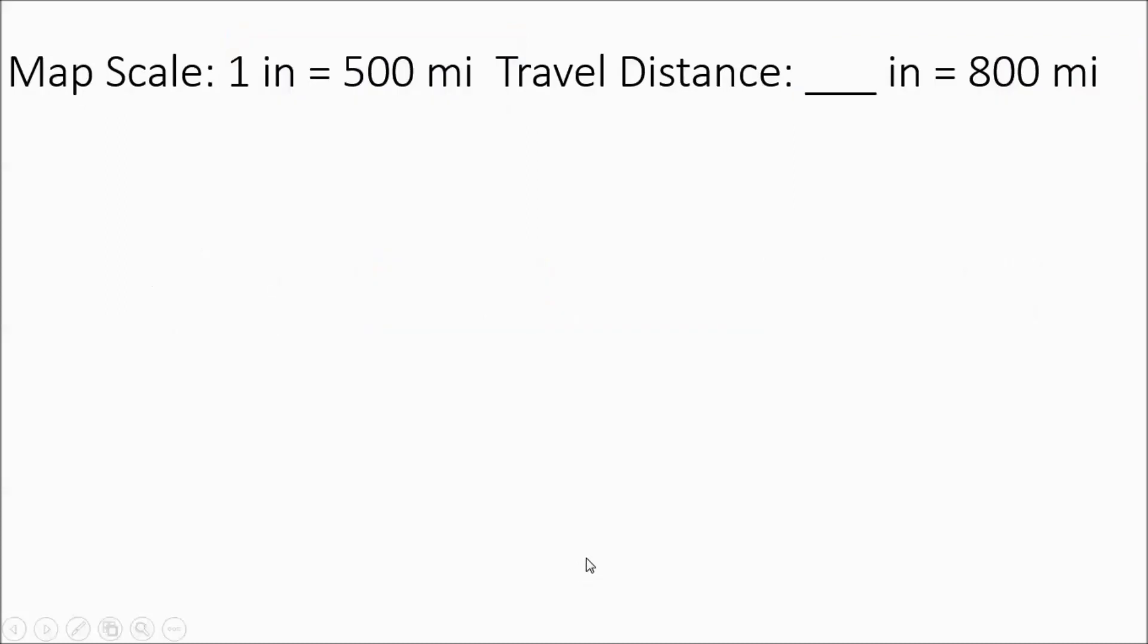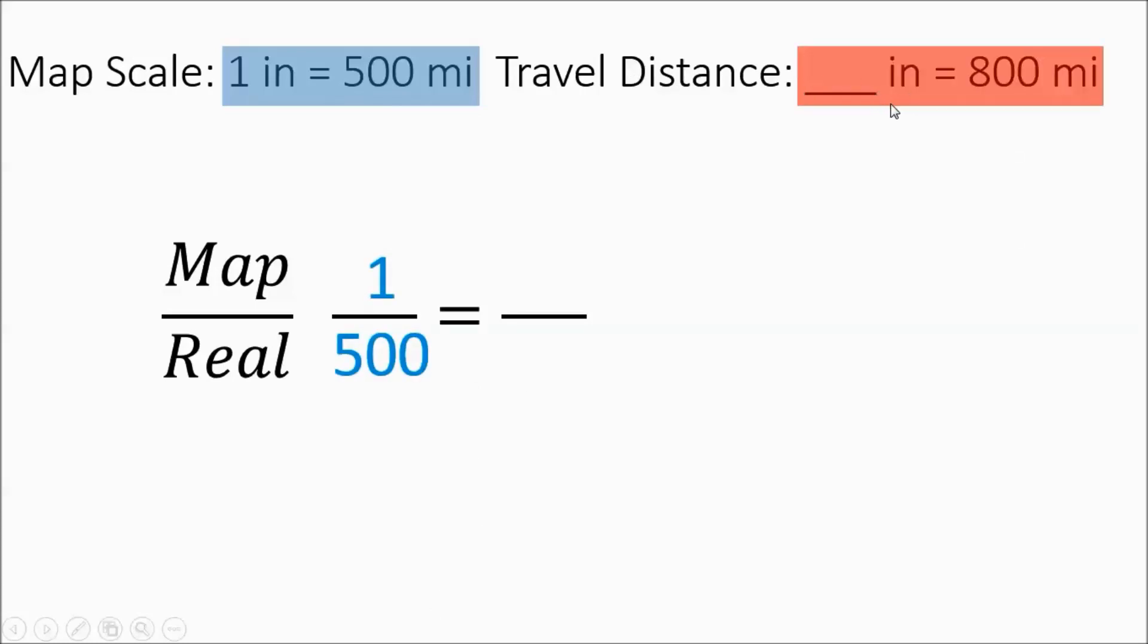All right, we'll do one more. See if you can pause it, figure it out on your own. Hopefully you're back and you've got it figured out. We've got the map to reality. On the map it's 1 inch to 500, 1 inch goes with 500. And then over here, we've got, this time, so it's a little different. Now we're trying to figure out, in reality you're looking to travel 800 miles. How many inches would it be on the map? So it's a little different. This time, the numerator is missing. And that's all right. You follow the same process.